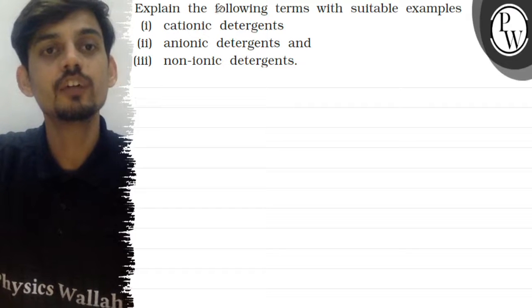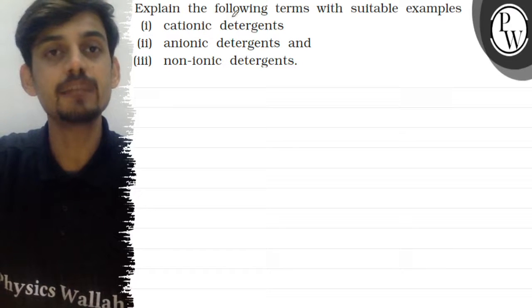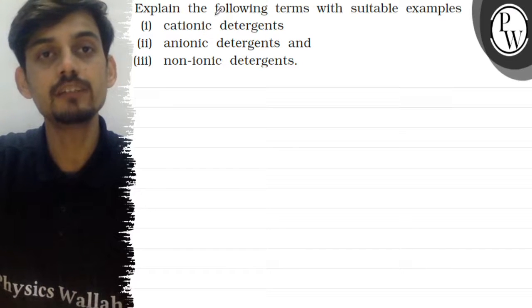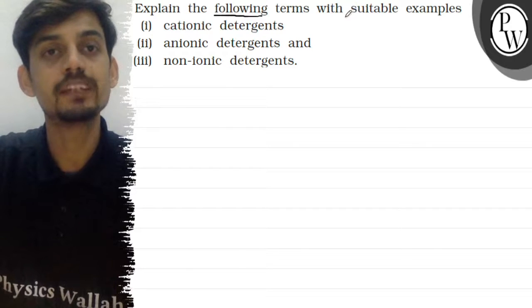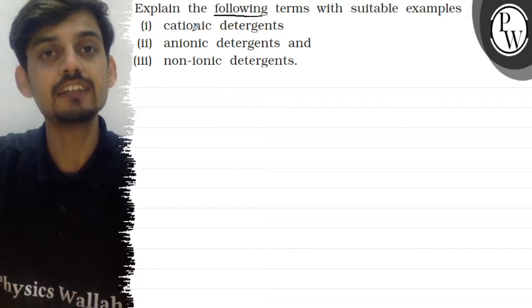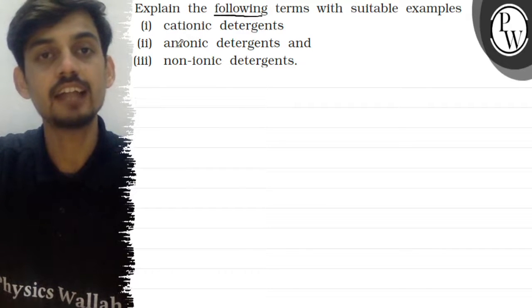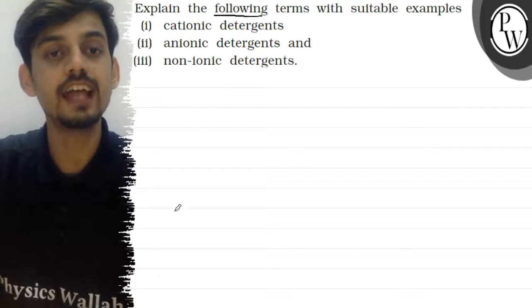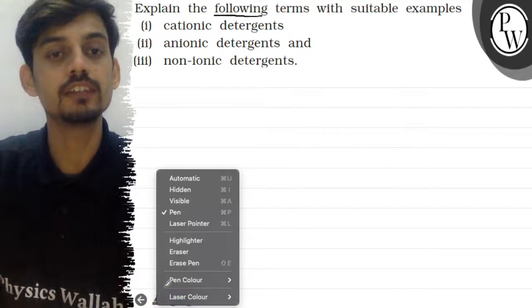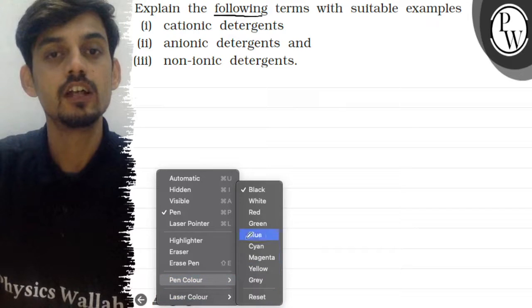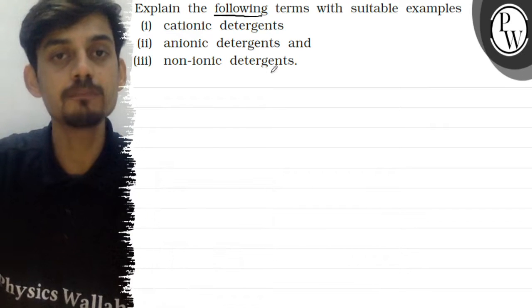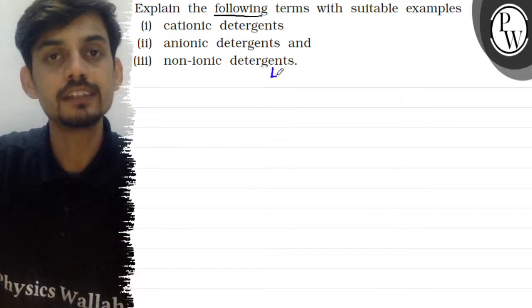The question says: explain the following terms with suitable examples — cationic detergents, anionic detergents, and non-ionic detergents. Detergents are basically surfactants.